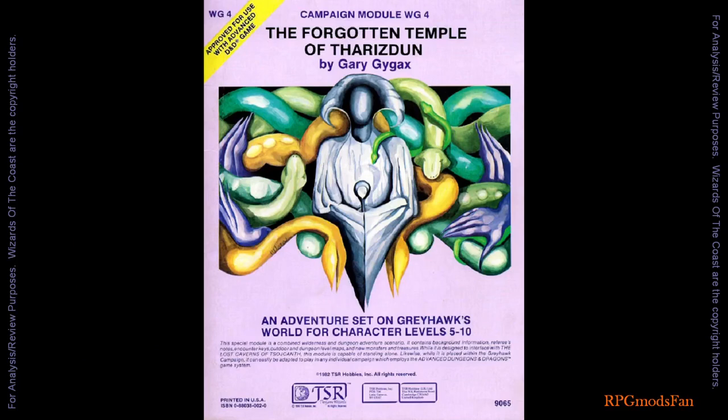Gary Gygax's WG-4 The Forgotten Temple of Tharizdon module can be run as a sequel to the S4 module. It takes place in the same locale as the S4 module. Originally, the S4 module was to be placed in the World of Greyhawk series and given the WG-3 header label. WG-1 and WG-2 would have been the Village of Homelet and the Temple of Elemental Evil. However, due to time constraints in the early 1980s, the Lost Caverns was added to the S series.